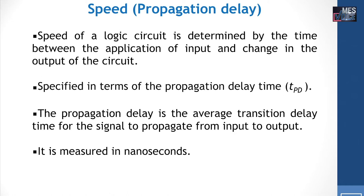Speed or propagation delay: the speed of a logic circuit is determined by the time between the application of the input and the change in the output of the circuit. It is normally specified in terms of propagation delay time, TPD. The propagation delay is the average transition delay time for the signal to propagate from input to output, and it is normally measured in nanoseconds.